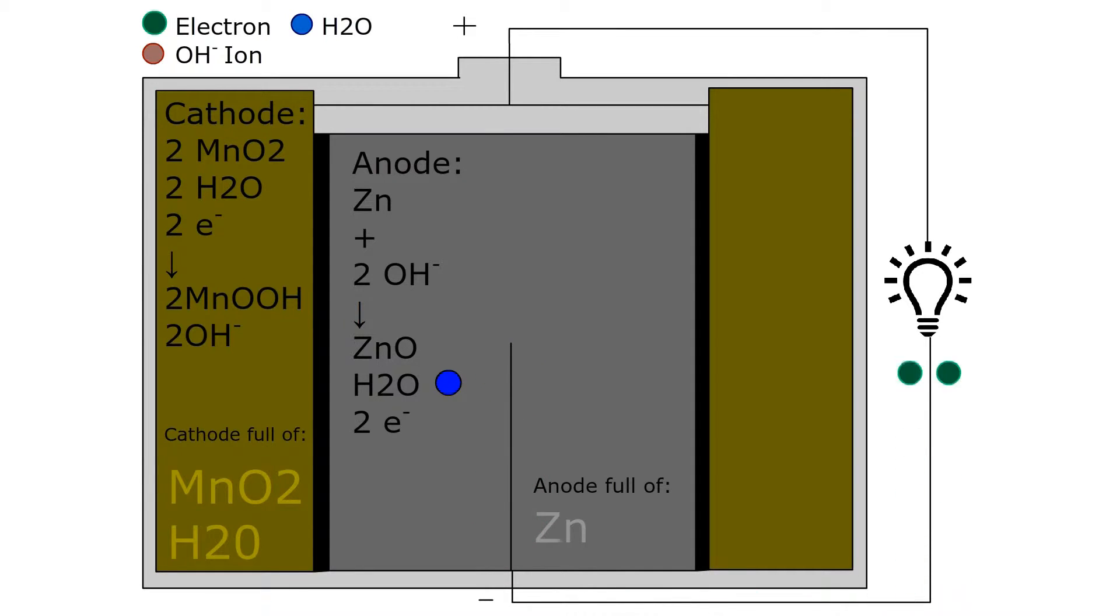The two electrons power whatever the battery was connected to, and the reaction in the cathode begins. Manganese oxide, as well as the water molecules and electrons from the previous reaction, form manganese oxyhydroxide and hydroxide ions, which travel back through the membrane. This process repeats itself until the battery is depleted.